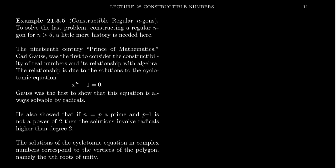I want to tell you a little bit of history. Going back to the 19th century, the so-called Prince of Mathematics, Carl Gauss, was the first to consider the constructability of real numbers and its relationship to algebra, which is what this whole Lecture 28 has been about in our lecture series.